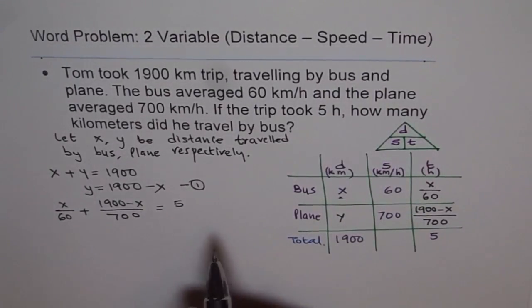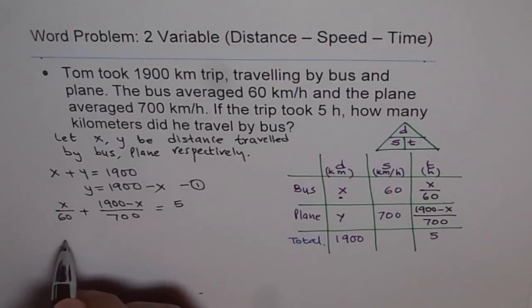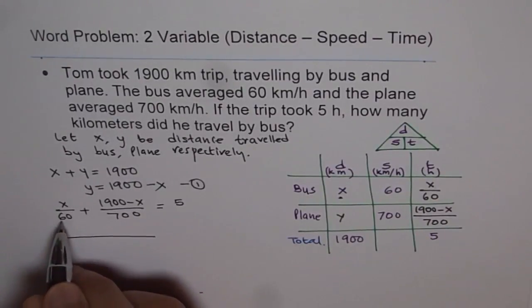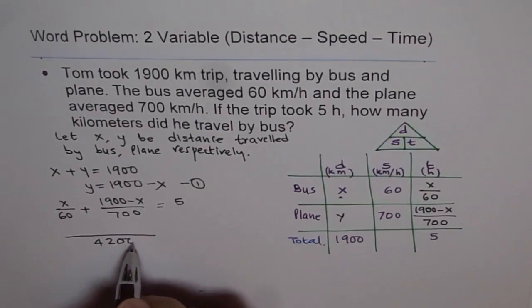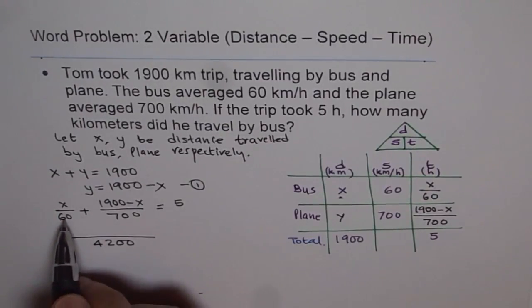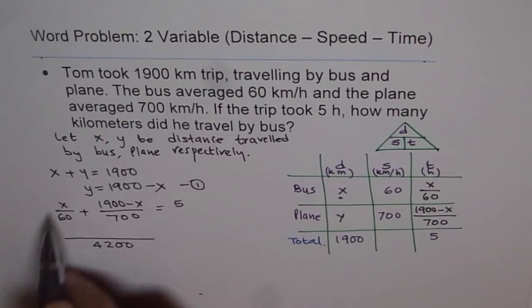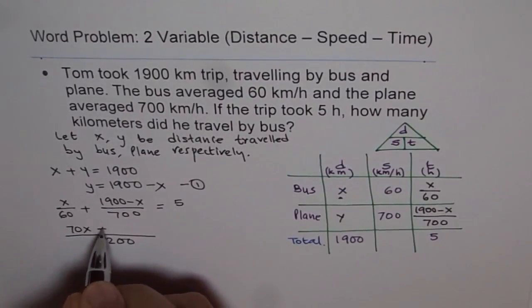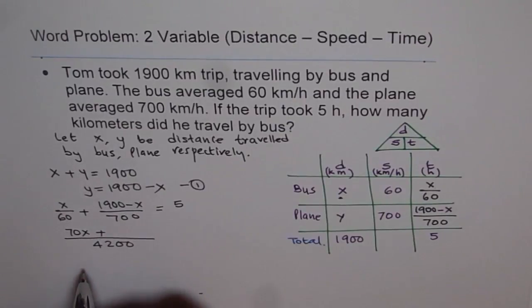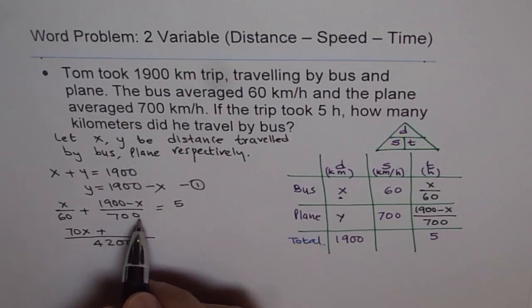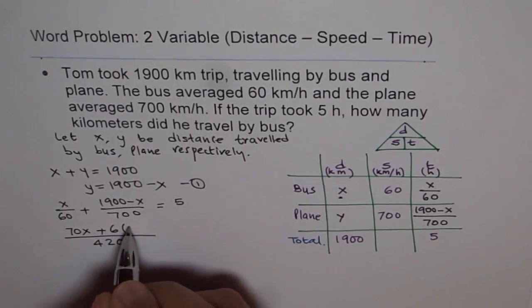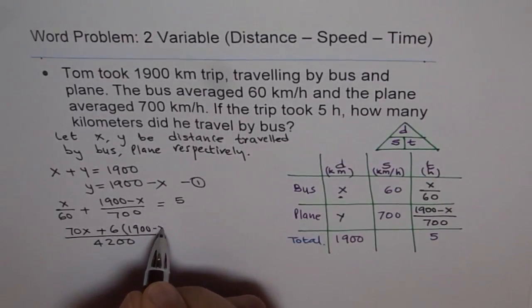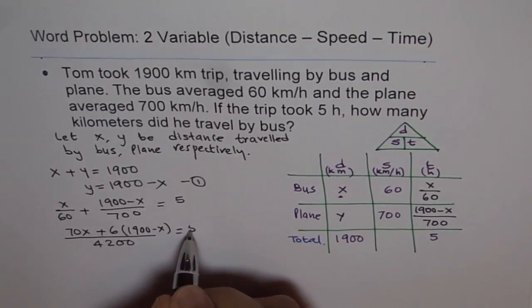Now we can take common denominator and solve for X. So the common denominator here is 4200: 7 times 6 is 42, then 4200. So to get 4200, we need to multiply this by 70. So we get 70 times X plus and this should be multiplied by 6. 6 times 7 is 42, 4200.